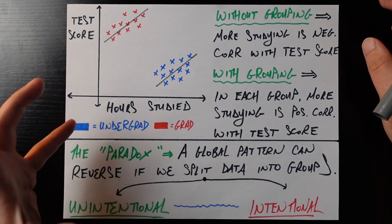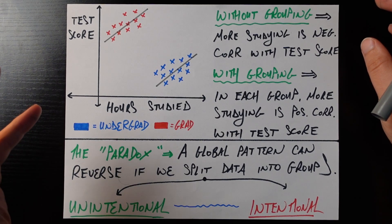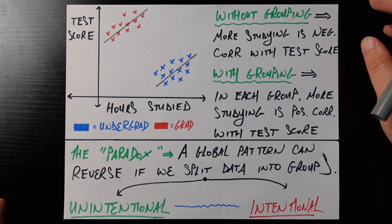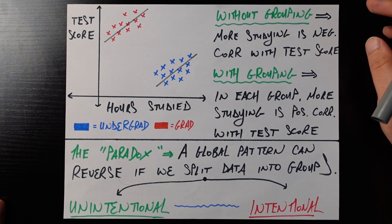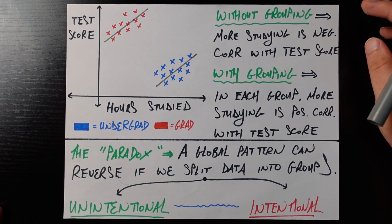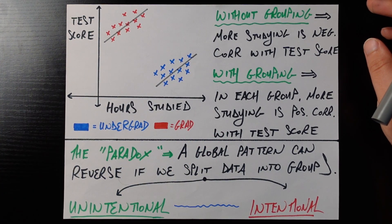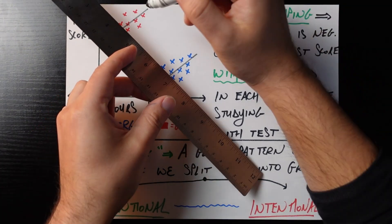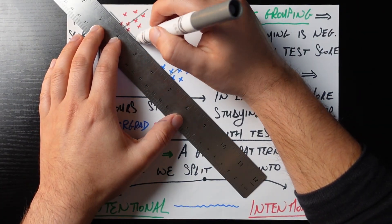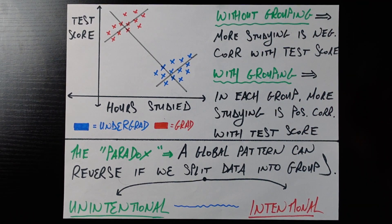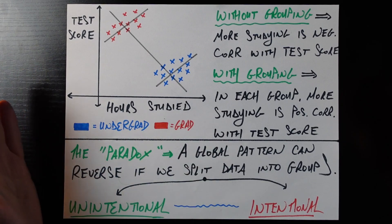But if we were blind to the fact that there's two separate populations in this data, if nobody told us there's undergraduate students and graduate students in this data, and asked us the same question, is there a positive or negative relationship between studying more and getting a higher test score? Then we would just draw a line of best fit through the entire data, which would actually look like this. A pretty sound negative relationship, a negative correlation between studying more and test score.